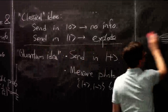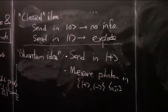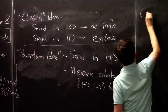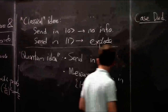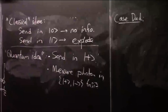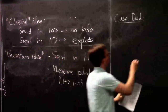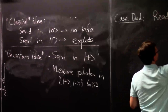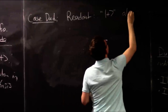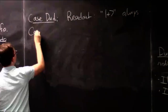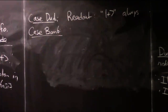Let's figure out what will happen. There are two cases. Case one — dud: you send in plus, nothing happens, it comes out as plus. Then you measure it in the plus-or-minus basis, and as we know, your measurement will read out plus with 100% probability. So your final readout, you won't explode, is always plus.